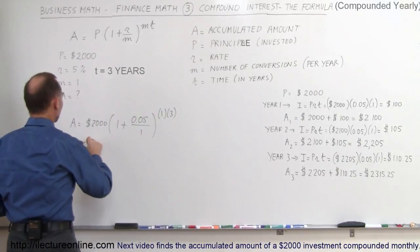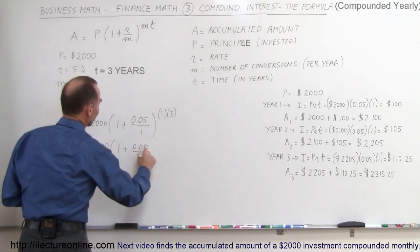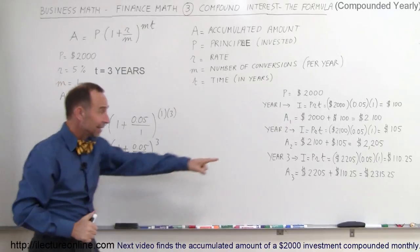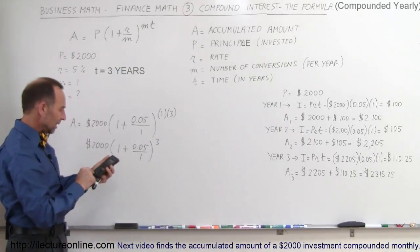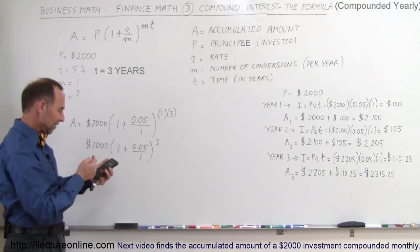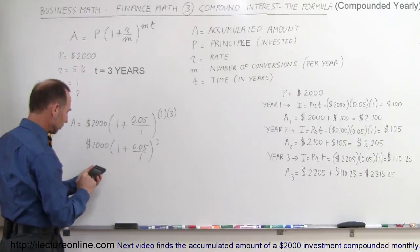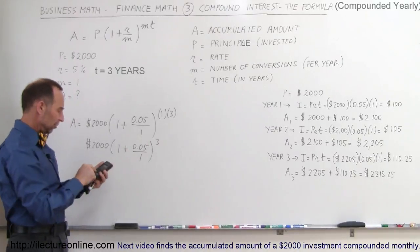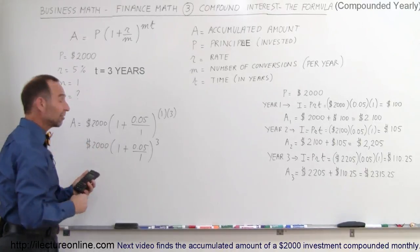So this becomes $2,000 times (1 plus 0.05 divided by 1) raised to the third power. We should get the exact same amount with a calculator. The way to do that is to take 0.05 divided by 1, which is 0.05, add that to 1, so now you have the quantity inside the parentheses. Now you raise that to the third power, so you find your X to the Y button, put in a 3,